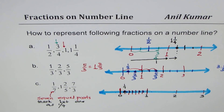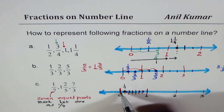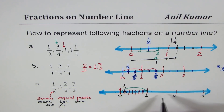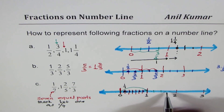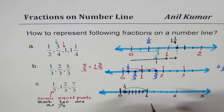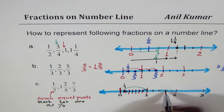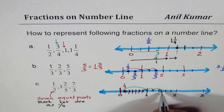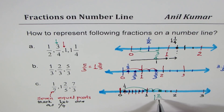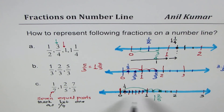For 1 whole and 2/5, we've already reached the 1 mark, so now we need 2/5. We divide the segment from 1 to 2 into five equal parts using trial and error: 1, 2, 3, 4, and 5. Then 1 whole and 2/5 means we go one whole and then move two-fifths further. Right there we get 1 and 2/5 on our number line.